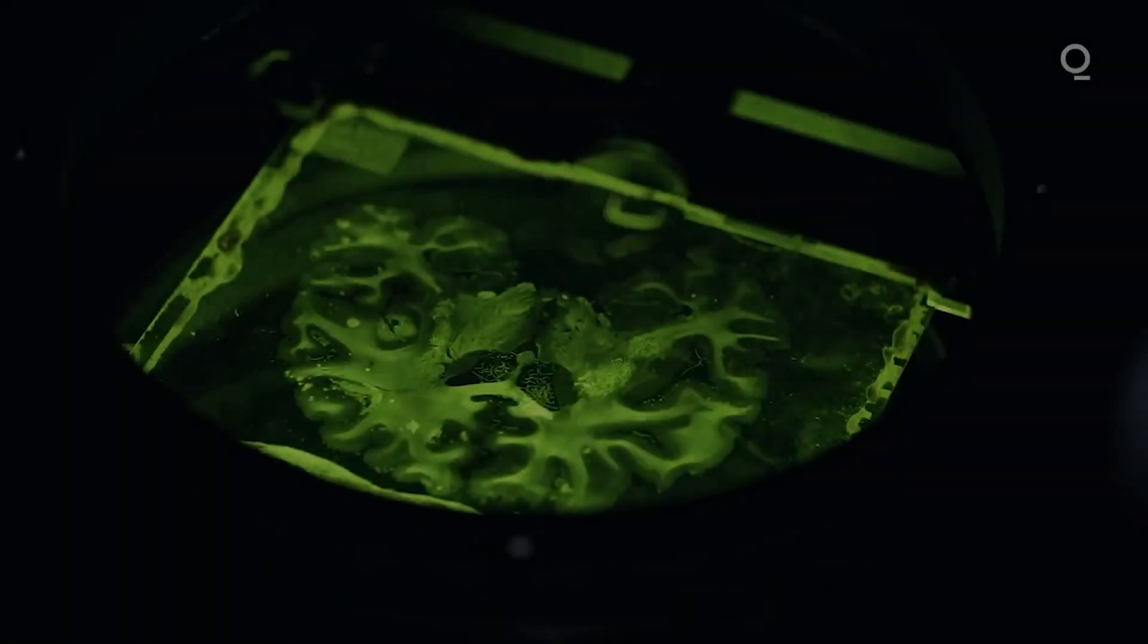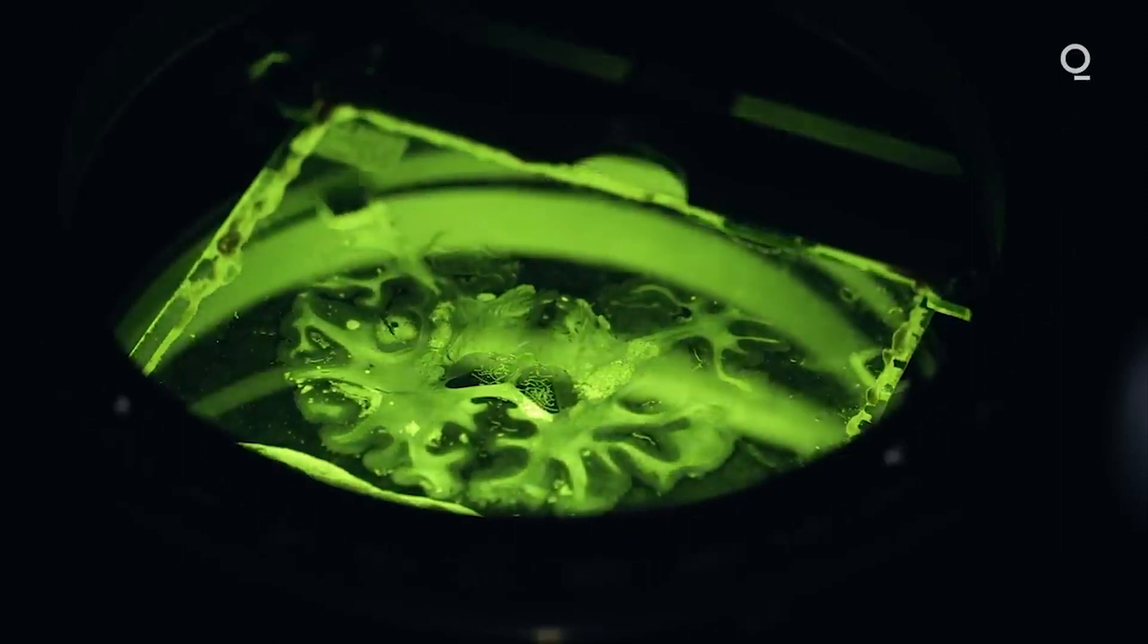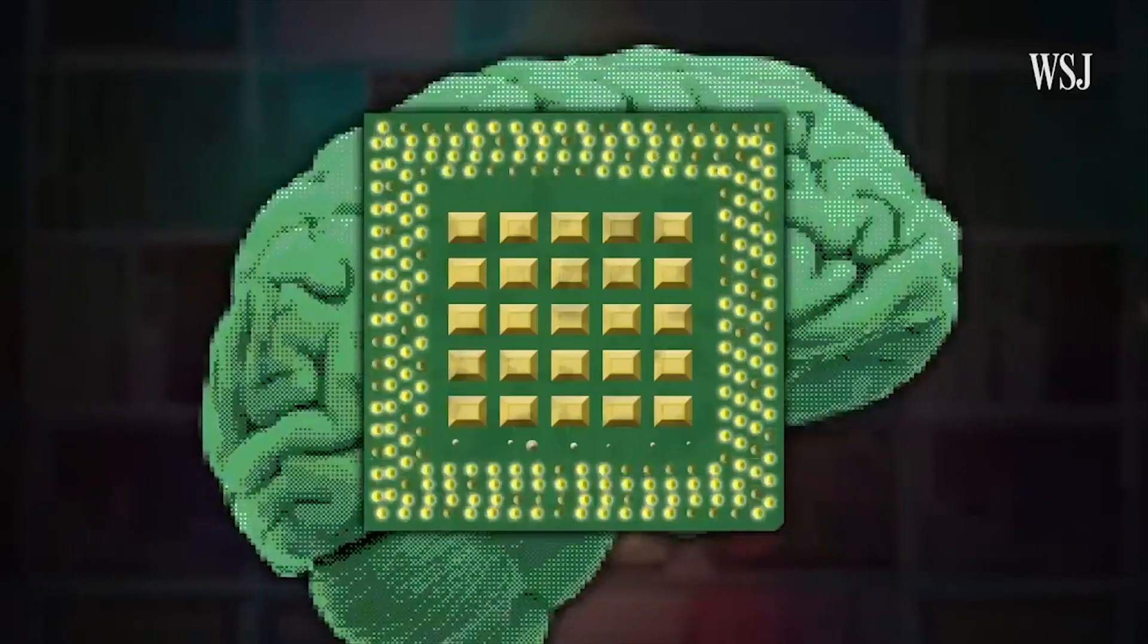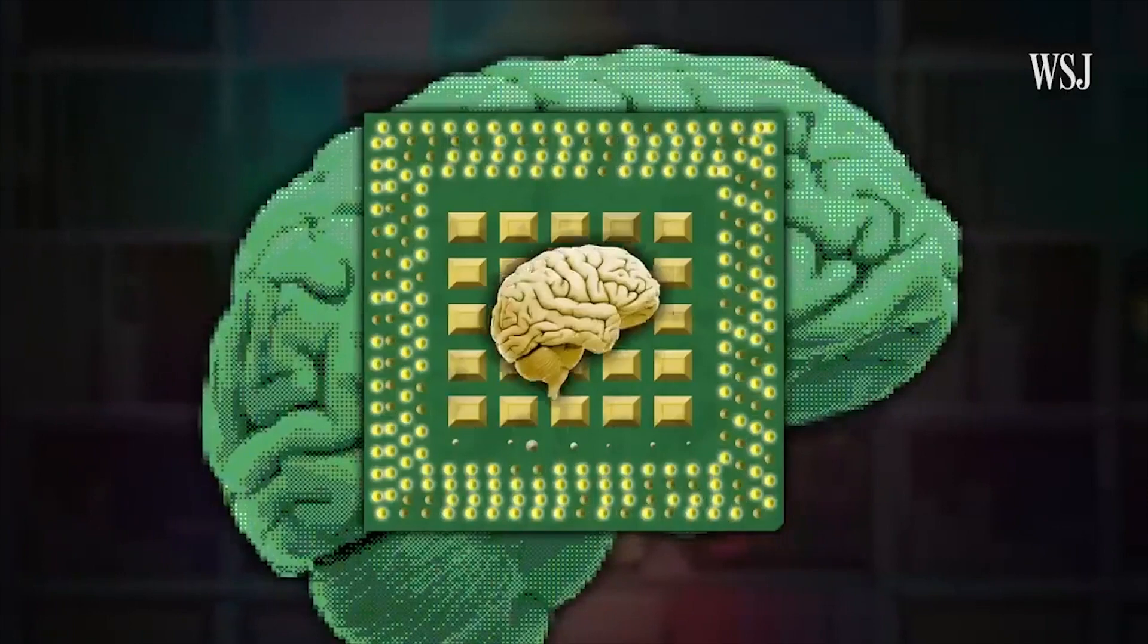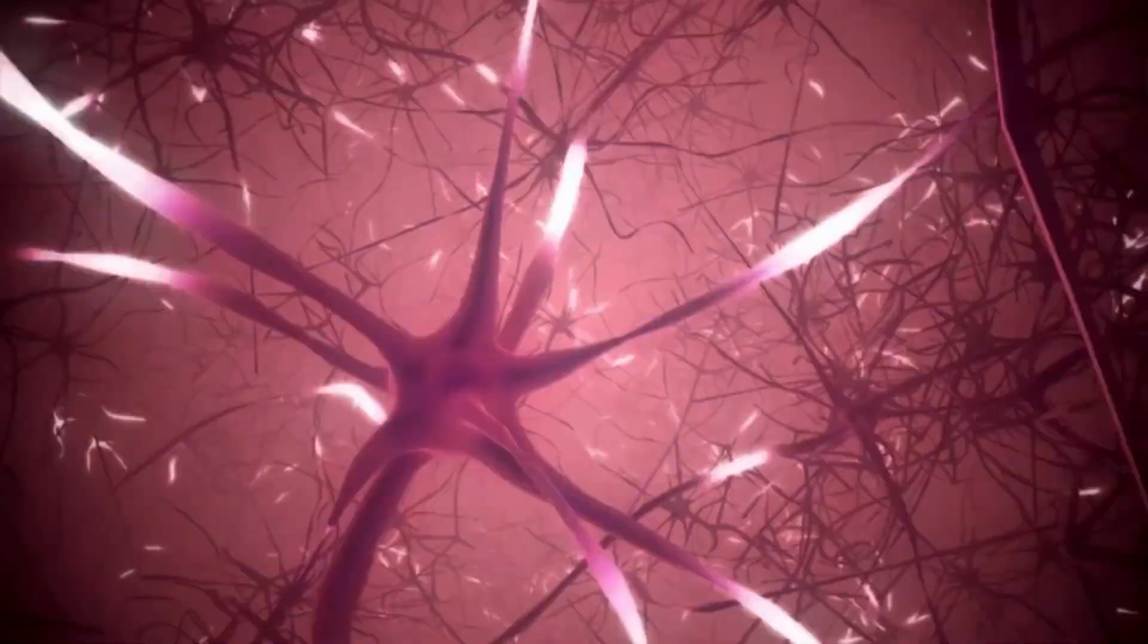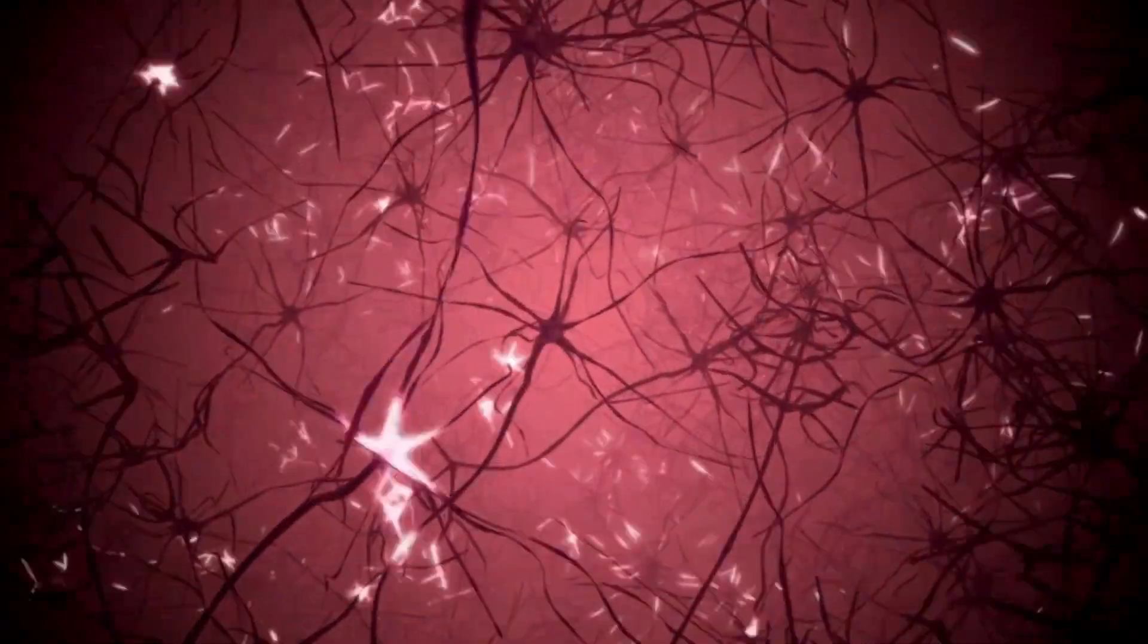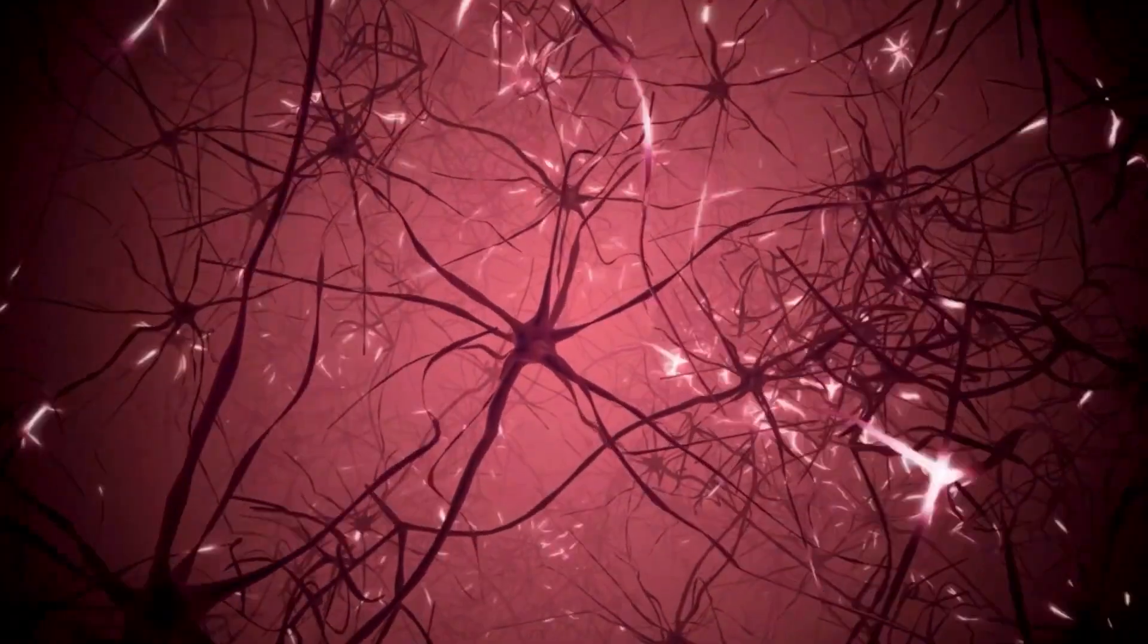What do your brain and a computer have in common? Not much, but there are parallels into how the two function. For instance, your brain includes around 100 billion neurons, small switches that allow you to think and remember things.